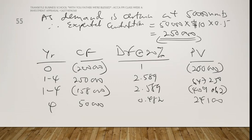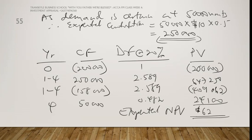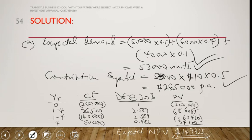Summing all values, we get the expected NPV for Part B. That covers the NPV issue we needed to understand.